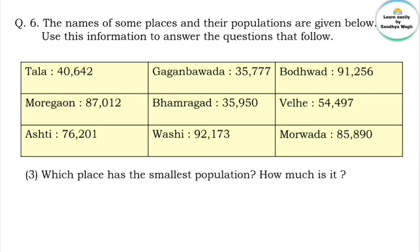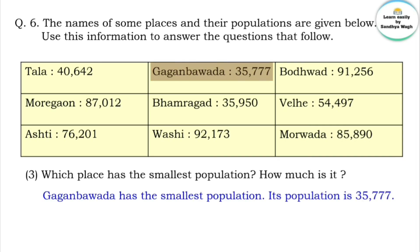Which place has the smallest population, and how much is it? Looking at the table, the smallest population belongs to Gagan Bawda. Gagan Bawda has the smallest population. Its population is 35,777.